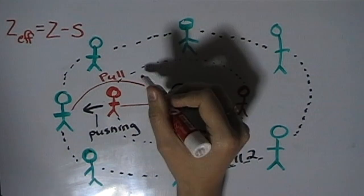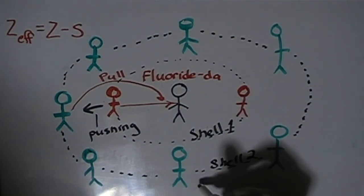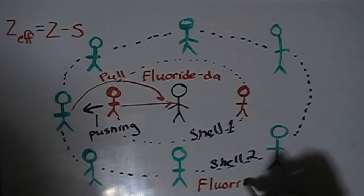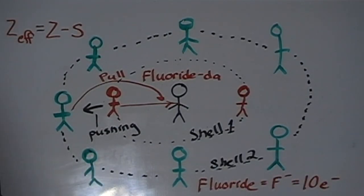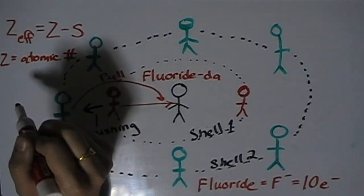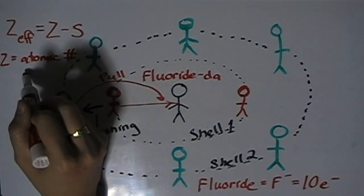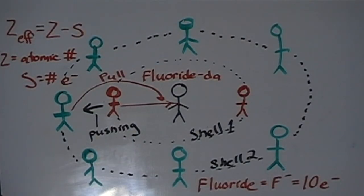Now let's give the celebrity a name: Fluorida. He's going to represent F⁻, which if you look at the periodic table, fluorine F has an atomic number of nine, which means it has nine protons. But since we're talking about fluoride, it has ten electrons because it has a negative charge. Shell one has two electrons, and shell two, its outer shell, has eight electrons.